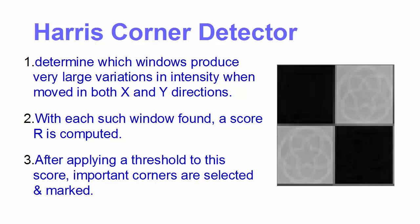Detecting corners using Harris Corner Detector contains three main steps. The first step is to determine which windows produce very large variation in intensity when we move in the X direction and the Y direction.